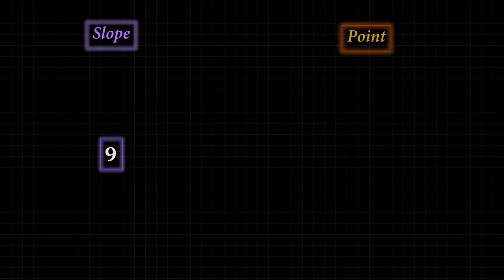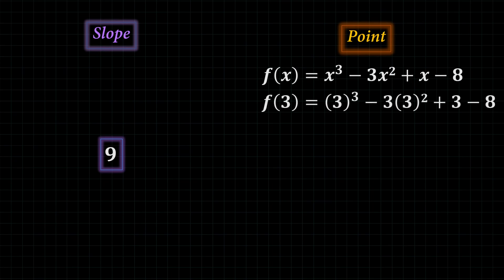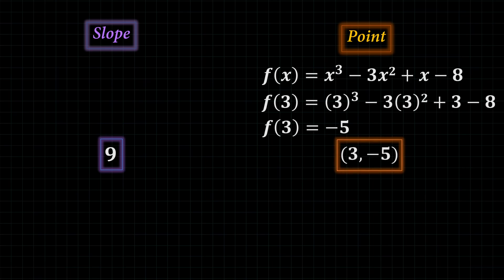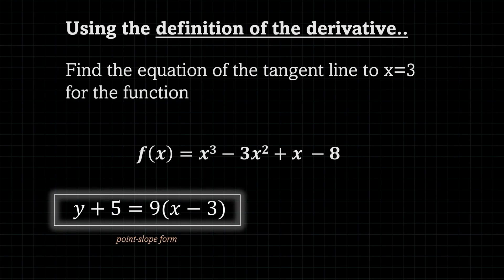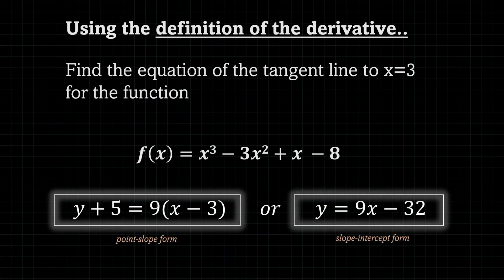Once we have the slope, it's time to find the point. We know the x-coordinate is 3, so we look at the original function and plug in 3 for x, giving us a y-value of negative 5. That means the coordinates of this point are (3, −5). Now we can plug both of these into the point-slope form. You can leave your final answer either in point-slope form or slope-intercept form.